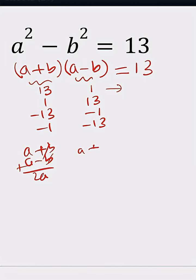And when you subtract them, you need to negate one and add them — that's going to give you 2b. So subtracting and dividing by 2 gives you b. Let's go ahead and do this.